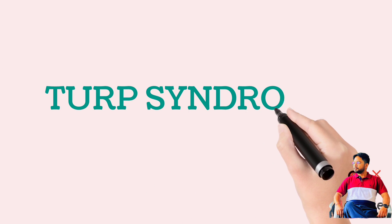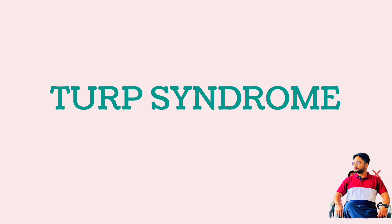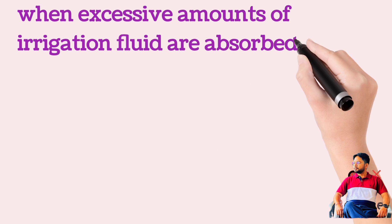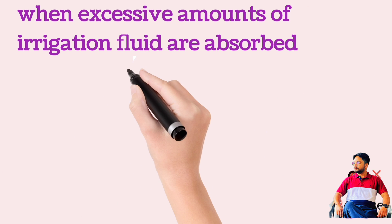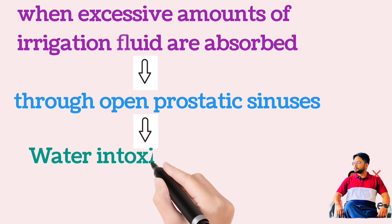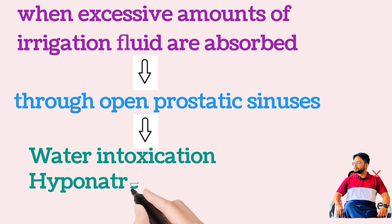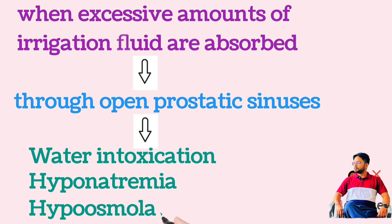TURP syndrome is a collection of signs and symptoms that occur when excessive amounts of irrigation fluid are absorbed through open prostatic venous sinuses, resulting in water intoxication, hyponatremia, and hyposmolality.